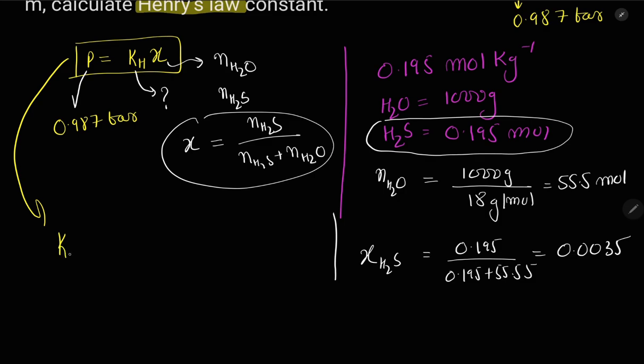Now the Henry's constant will be partial pressure of H2S divided by mole fraction of H2S. The partial pressure of H2S is 0.987 bar, divided by the mole fraction of H2S which we calculated to be 0.0035. So the answer comes out to be 282 bar.